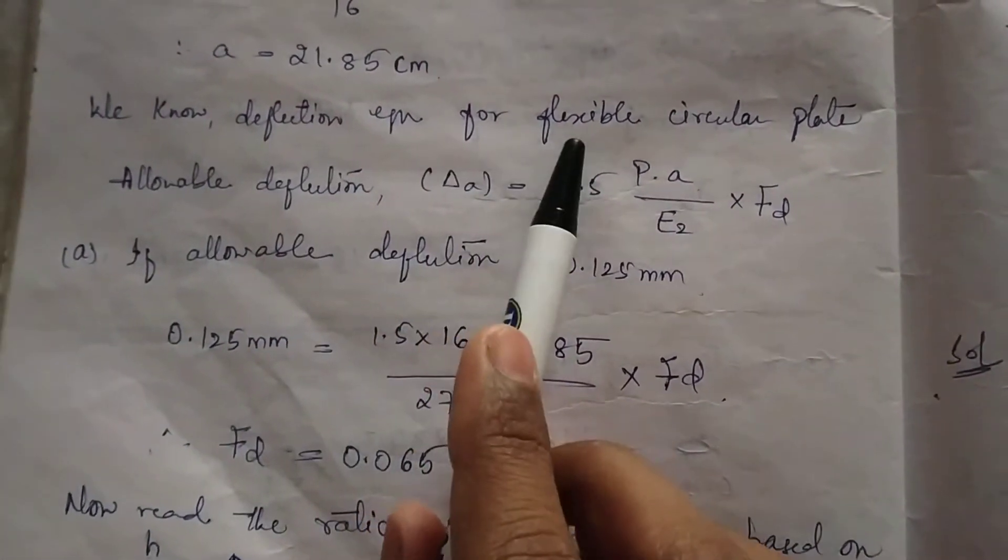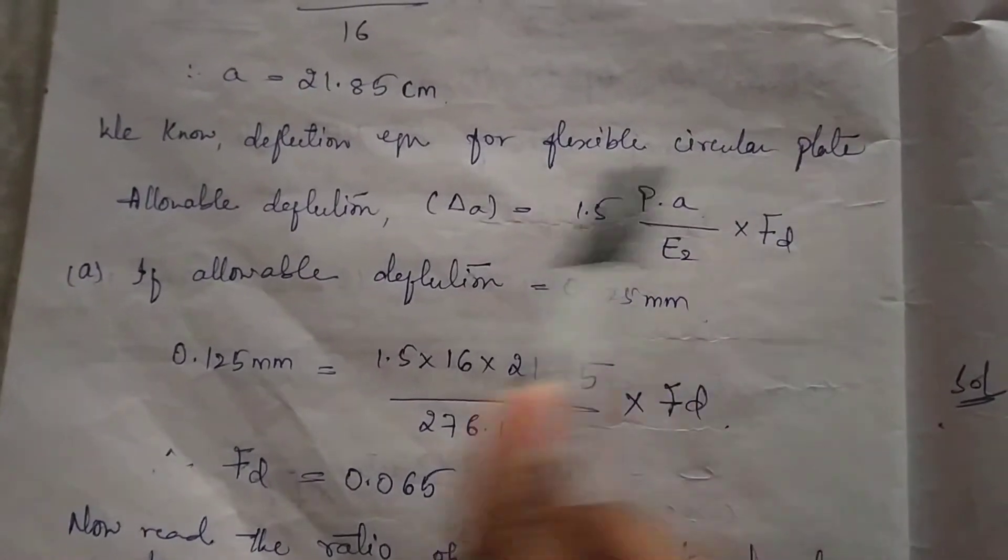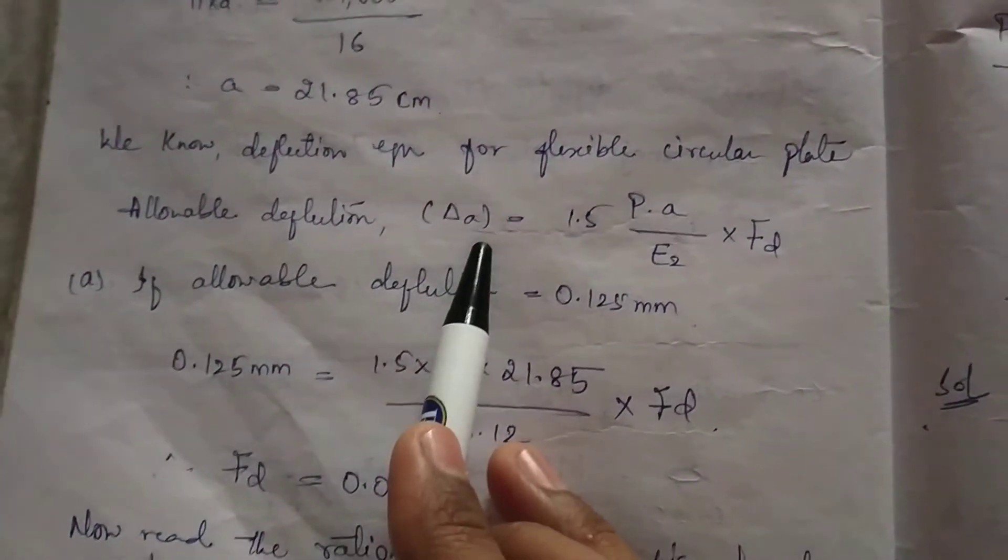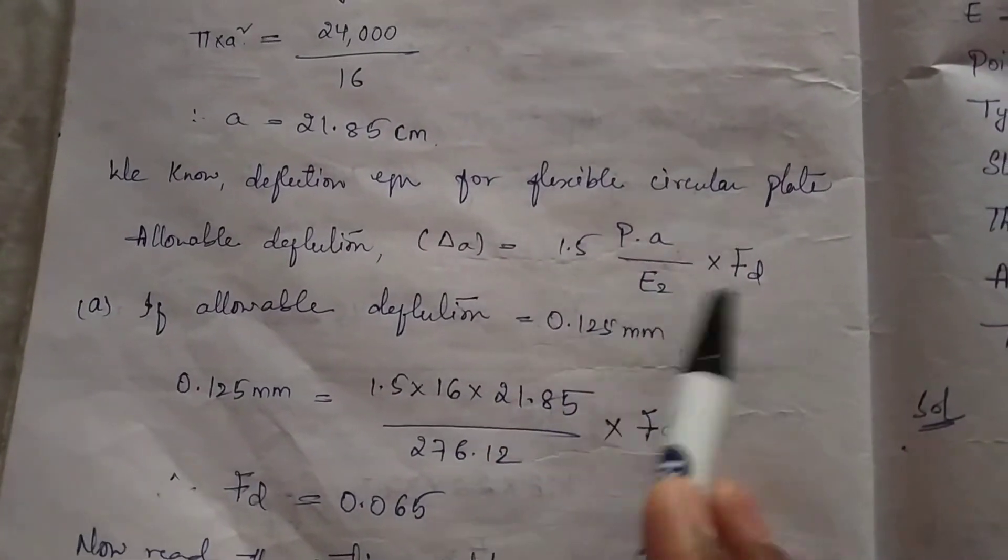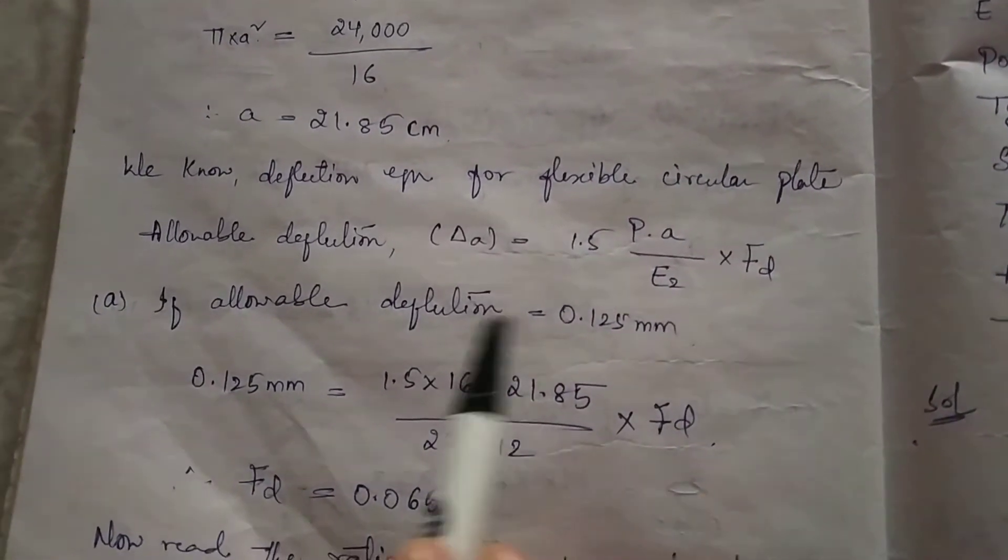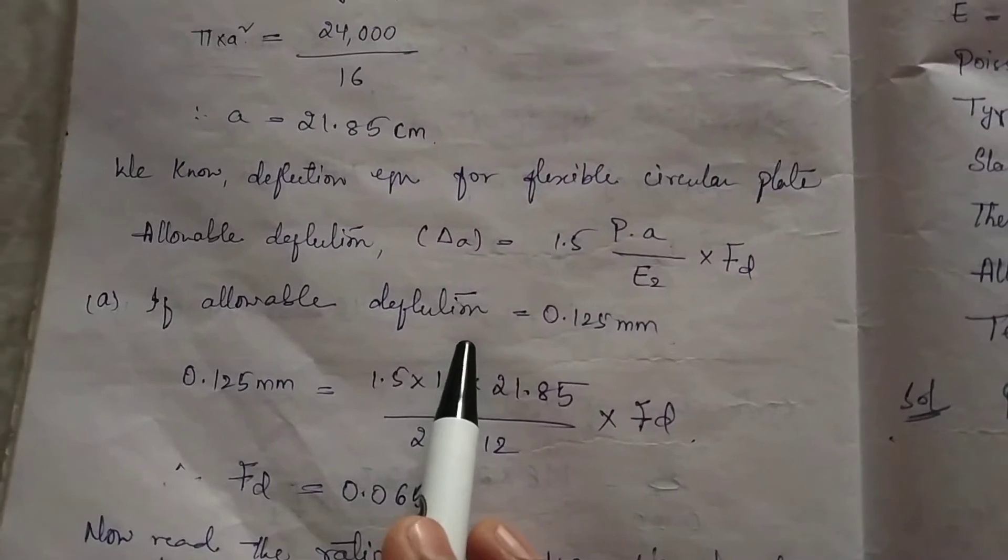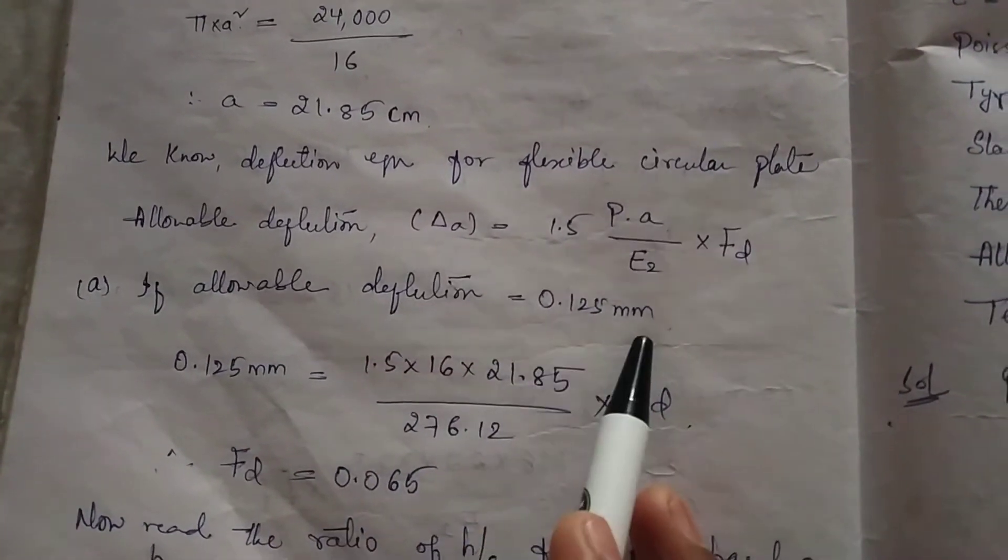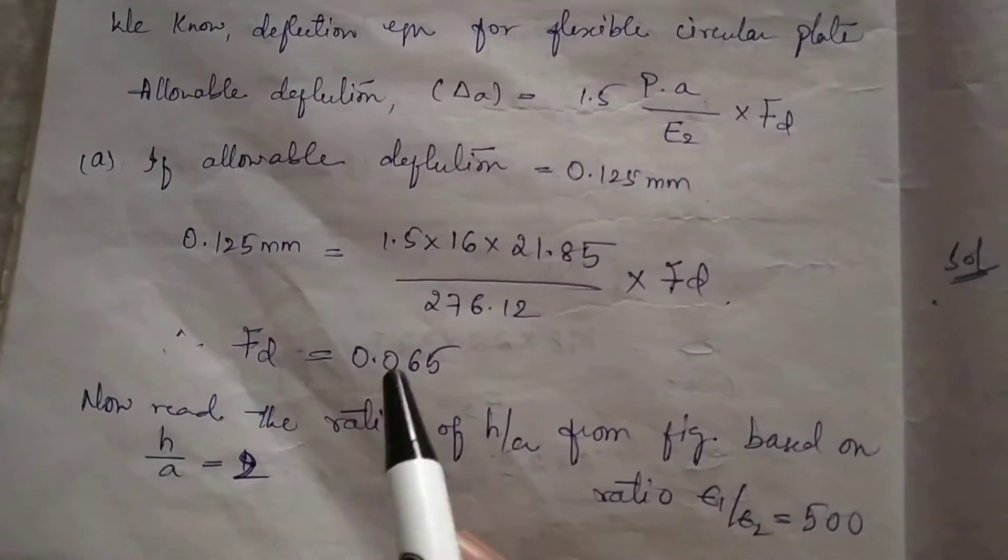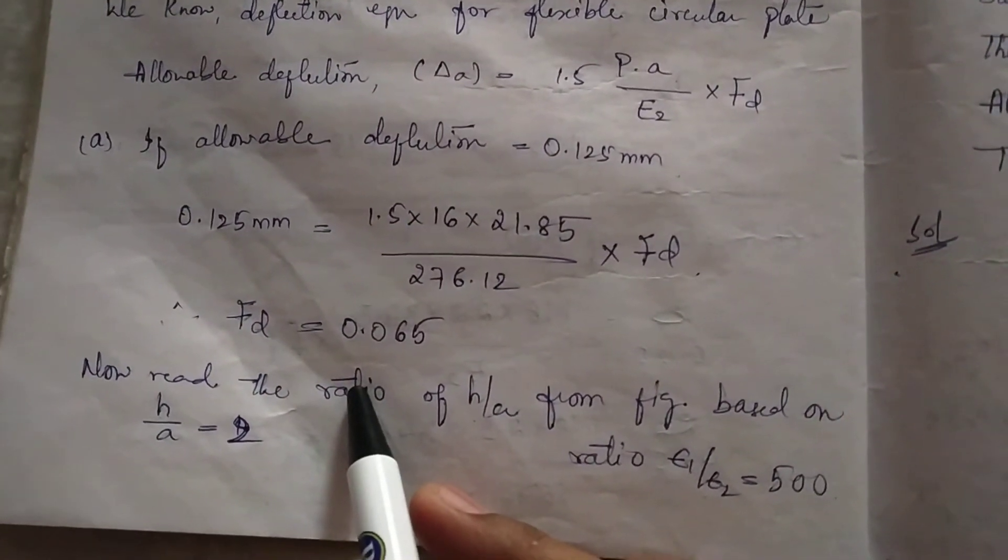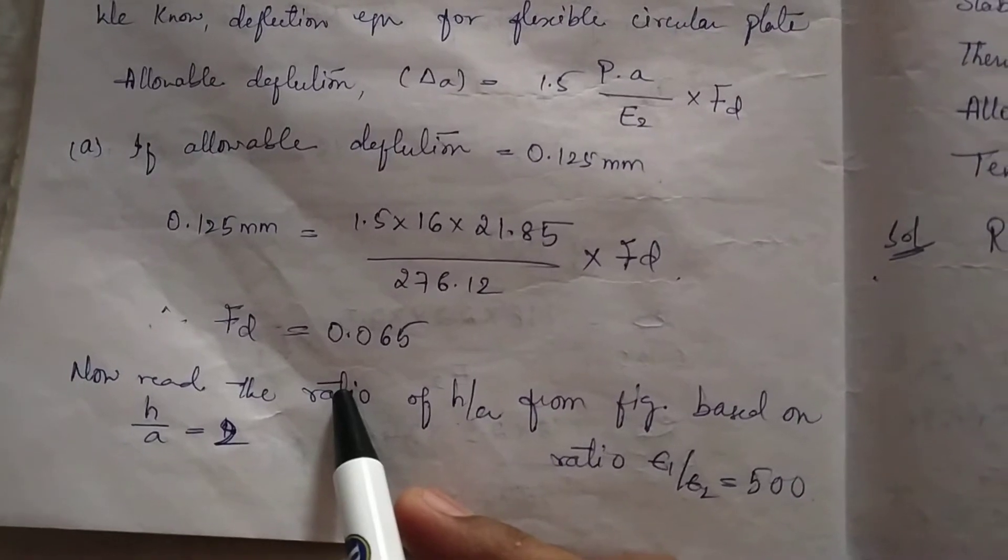Next we noted the deflection equation for flexible circular plate. Allowable deflection can be found by the formula: delta A is equal to 1.5 PA by E2 into Ft. As given in the question, we have to find the deflection at 0.125 mm. We will calculate Ft now.